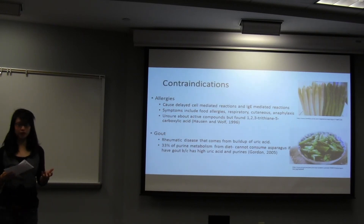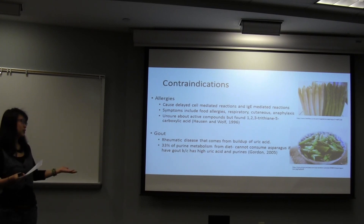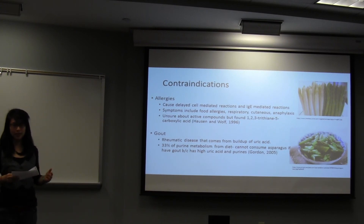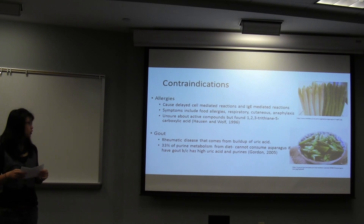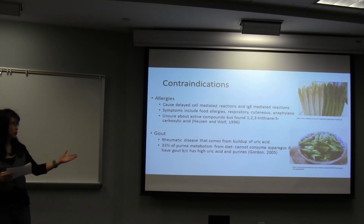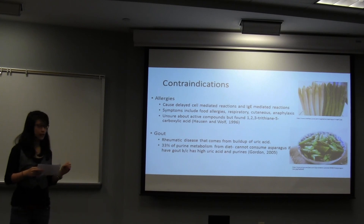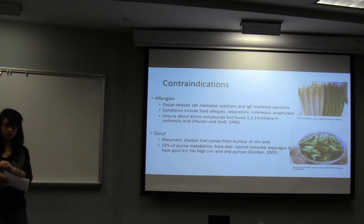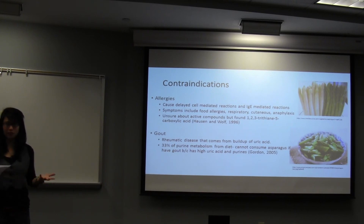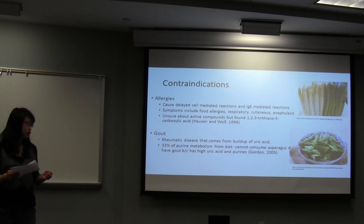Some contradictions: as with all foods, some people will be allergic to asparagus, although it's very rare. If you are allergic, it actually causes a very delayed reaction — it might take up to a few hours. It can range from a mild food allergy to as severe as suffocation, which is very serious. No one is sure of the exact active compounds yet, but Halston and Wolff found that one of them is 1,2,3-trithiane-5-carboxylic acid. Also, if you have gout — which is the buildup of uric acid crystals in your joints — you should be careful about eating asparagus. Uric acid comes from the breakdown of purines: about 67% comes from your own cell breakdown, and the other 33% comes from your diet. You should not consume things high in purines, like asparagus, if you have gout, because you will be in pain for a few days.